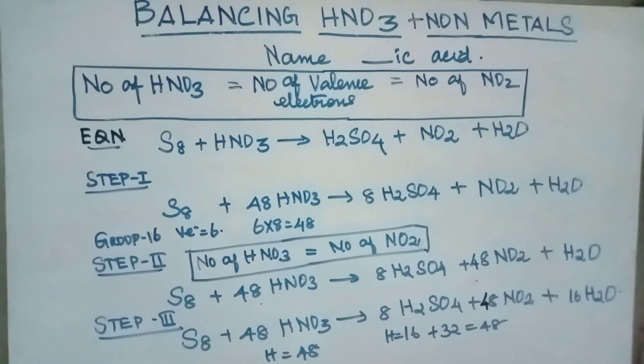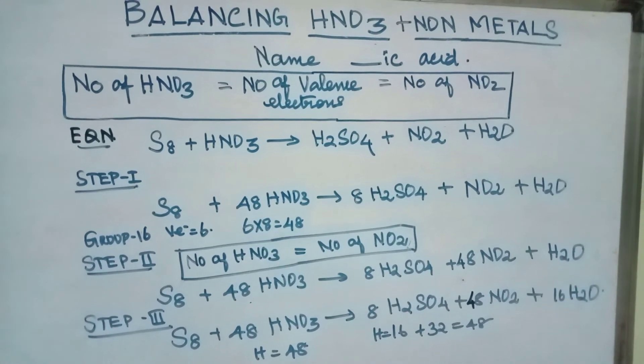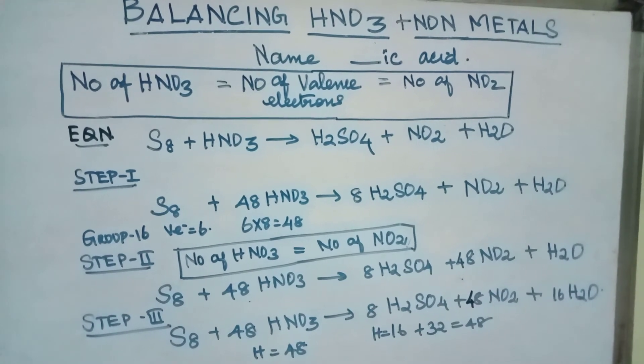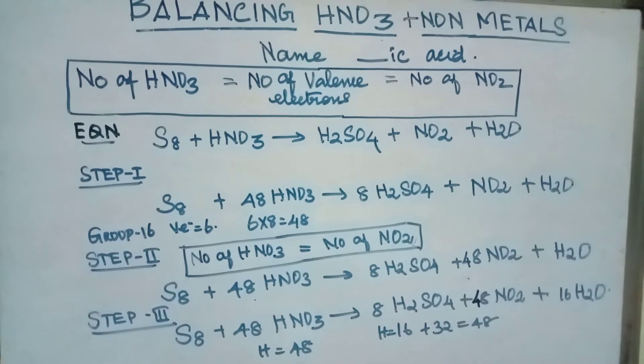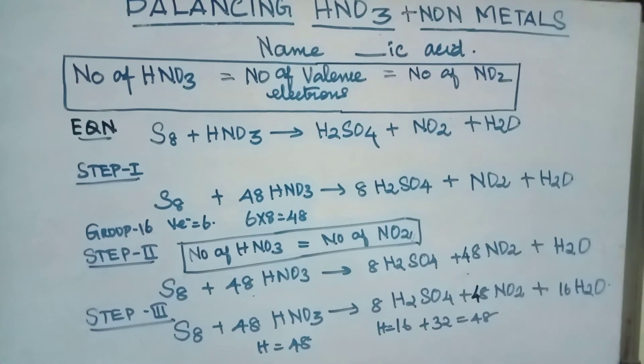So, the final step will be S8 plus 48 HNO3 gives 8 H2SO4 plus 48 NO2 plus 16 H2O. Thank you for watching.